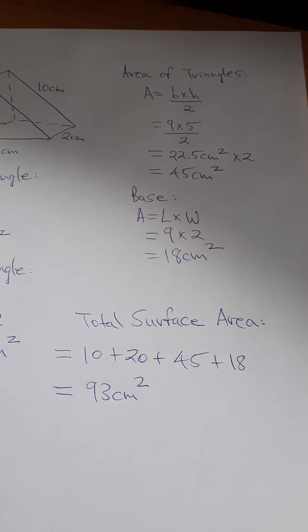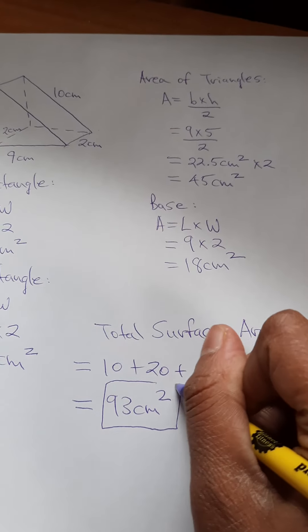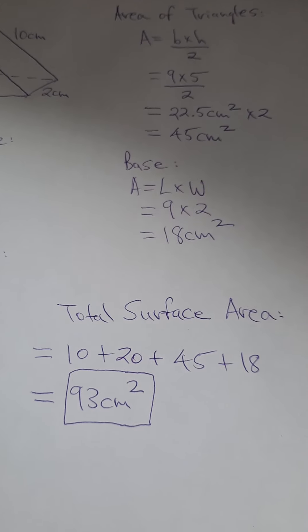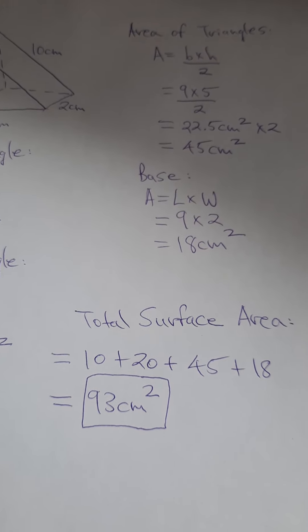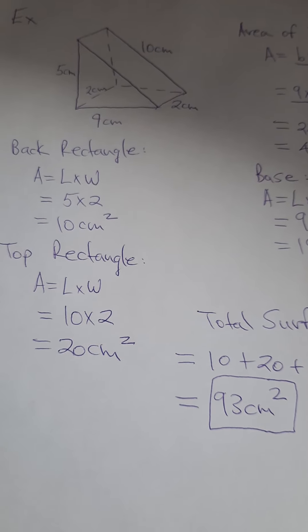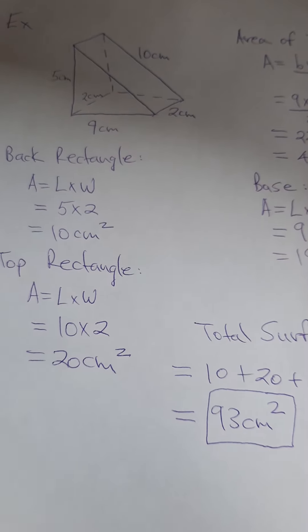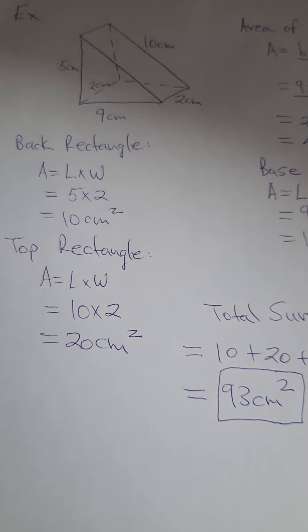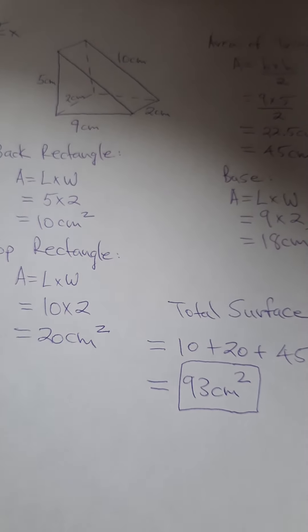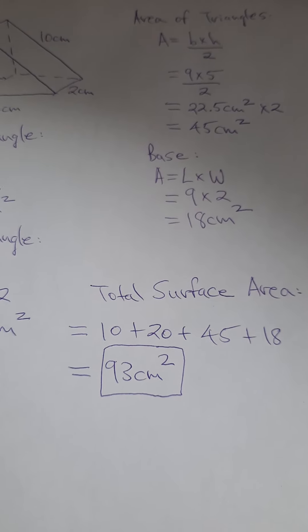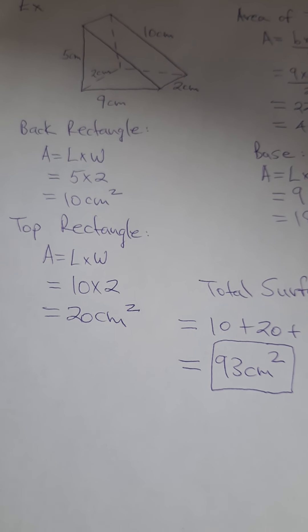That's your final answer — 93 centimeters squared — so let's box it. The surface area is simply the area of all the faces added together; it's the area found on the outside of the object. Remember, a triangular prism can be drawn in various ways — this is just one common version. If there are no questions, that brings this video to an end. Thanks for watching — please like, share, and subscribe, and I'll see you in the next video!